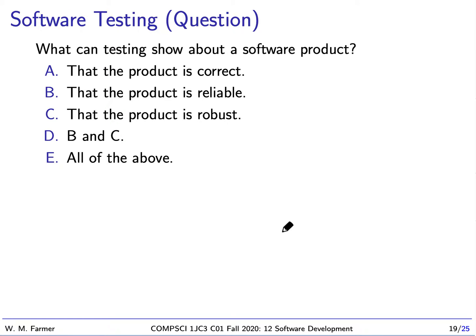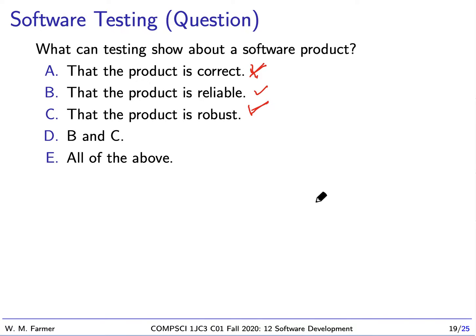Testing does not show that a product is correct, usually. This is because to be correct, we have to show it works on all inputs, in all environments, and this is usually an impossibility. But testing can show that a product is reliable and that it's robust. Robust means the product can deal with unexpected situations. Reliable means it usually works correctly when used as designed. So B and C is the right answer.